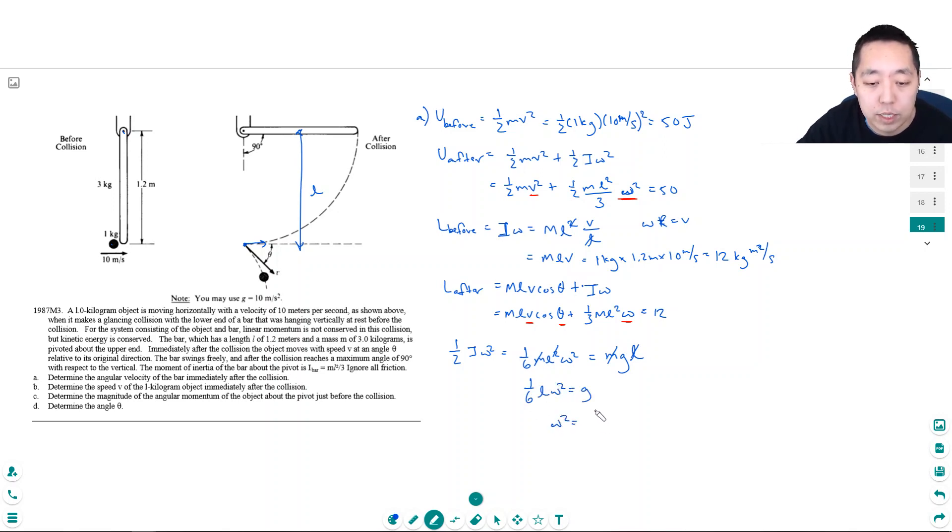So I have 1 sixth L omega squared is equal to G. Omega squared would have to equal 6G over L. And so omega would have to equal the square root of 6G over L. So this is the square root of 6 times 10 divided by 1.2. So that's 60 divided by 1.2. What's that? 50?